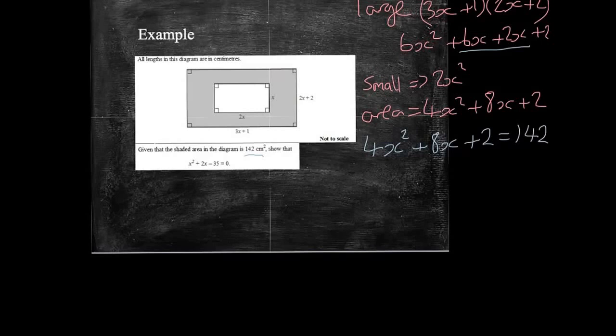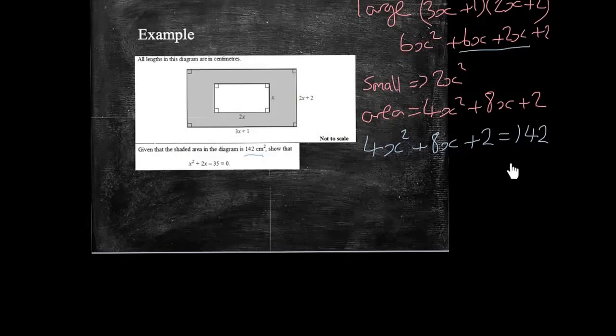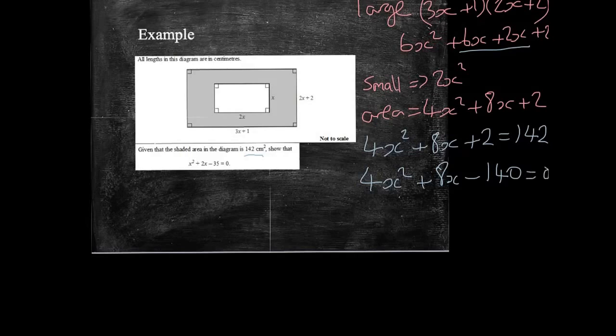Whenever we're doing anything to do with quadratics, more often than not, we like it to equal zero. And in fact, the question says show that this equals zero. So I'm going to rearrange my formula. I'm going to take 142 away from both sides. So let's have 4x squared plus 8x minus 140 equals zero.